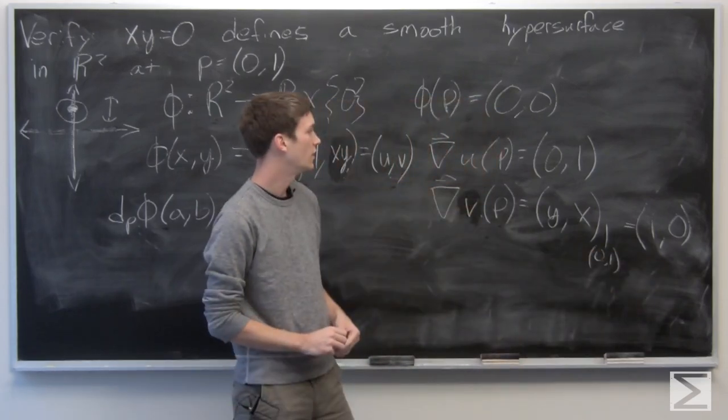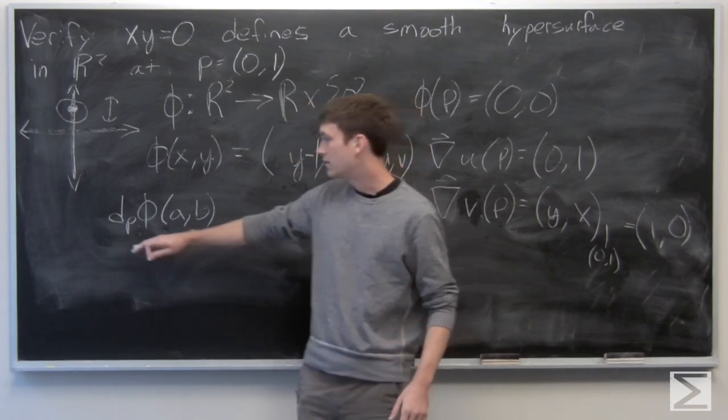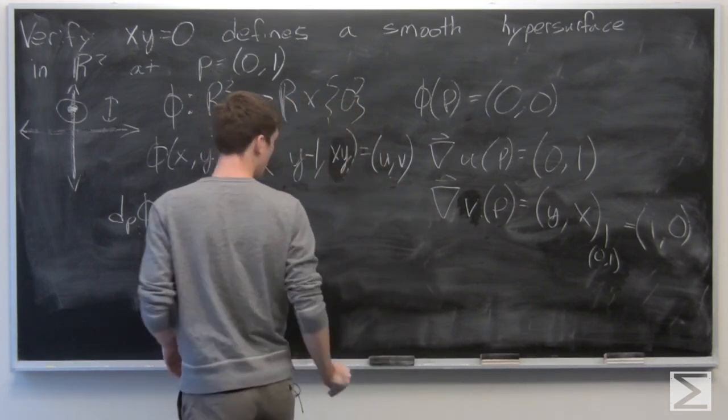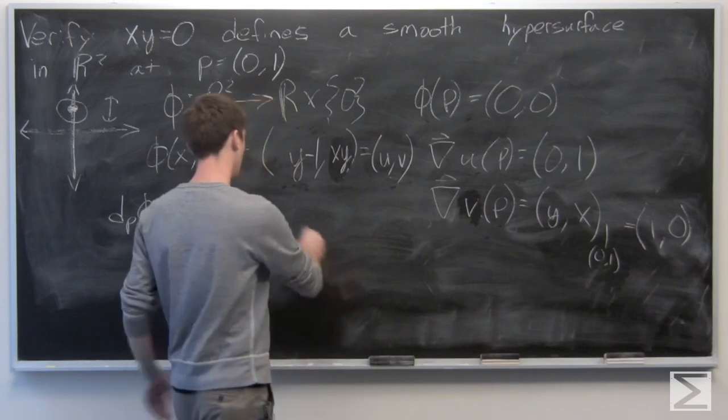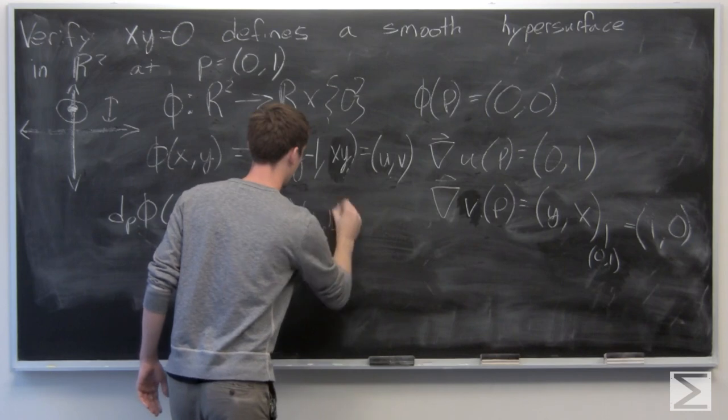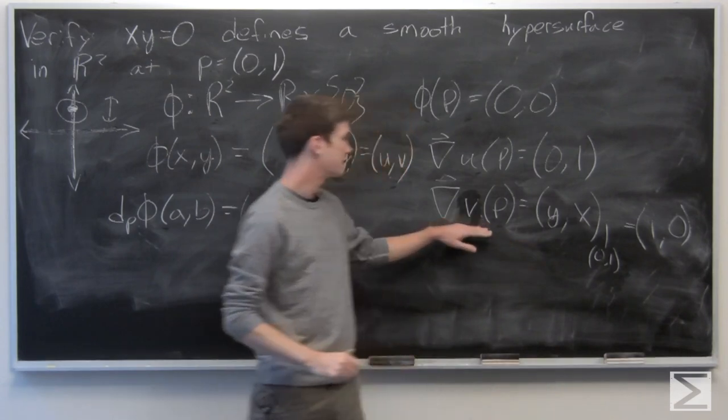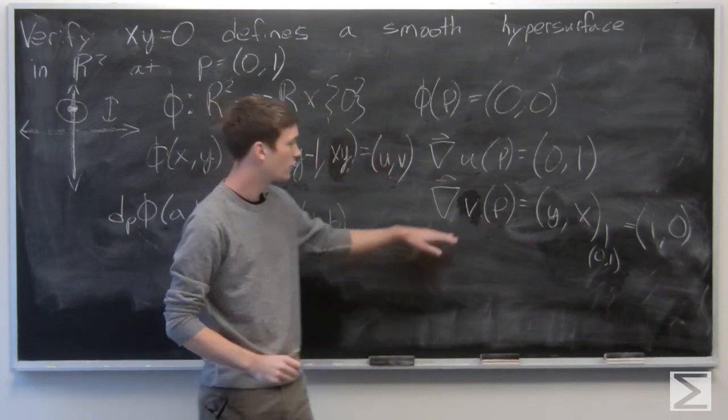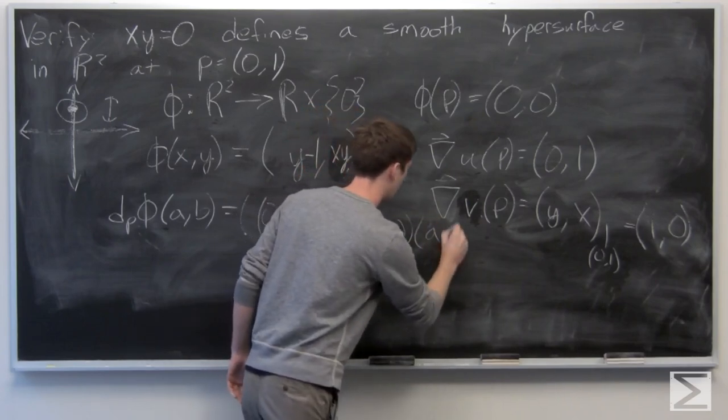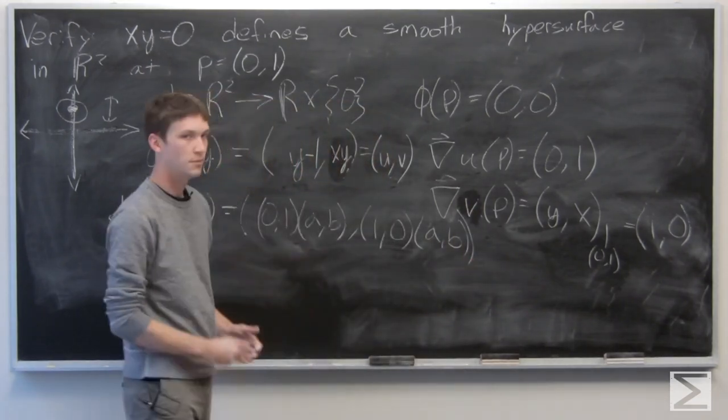So we know then that the total derivative of phi at p with respect to a, b is our gradient vector of u at p dotted with a, b, and the second component is the gradient vector of v at p dotted with a, b. We can compute the dot product.